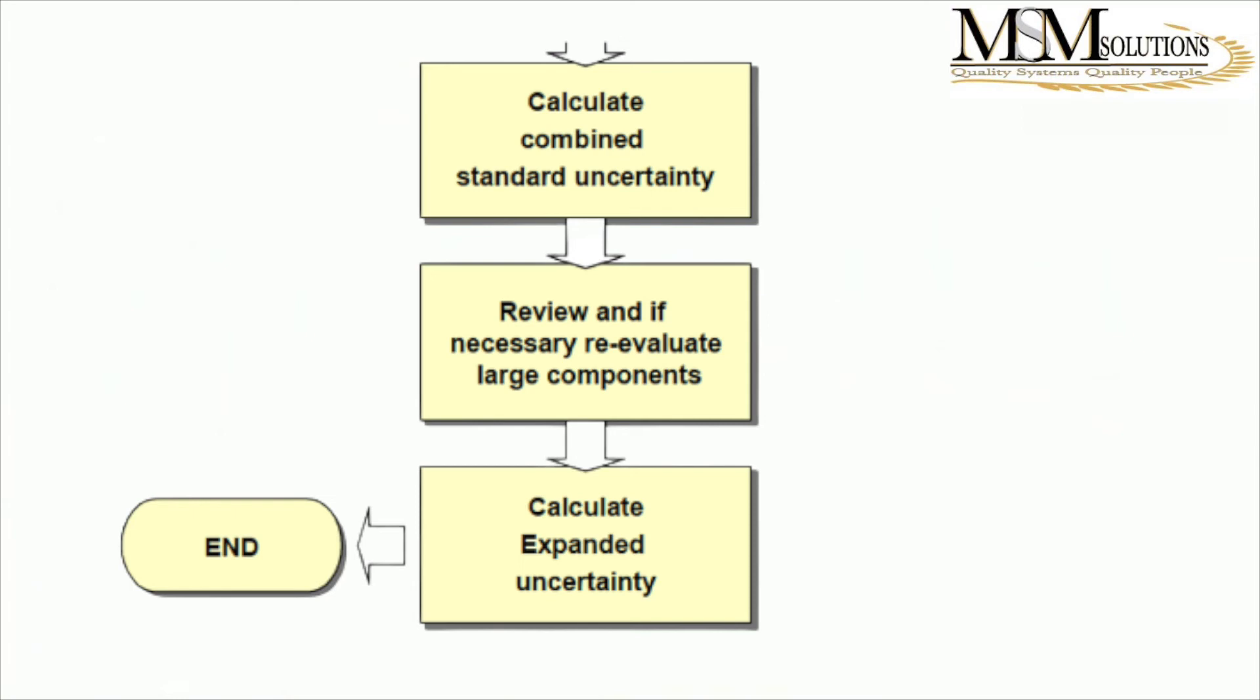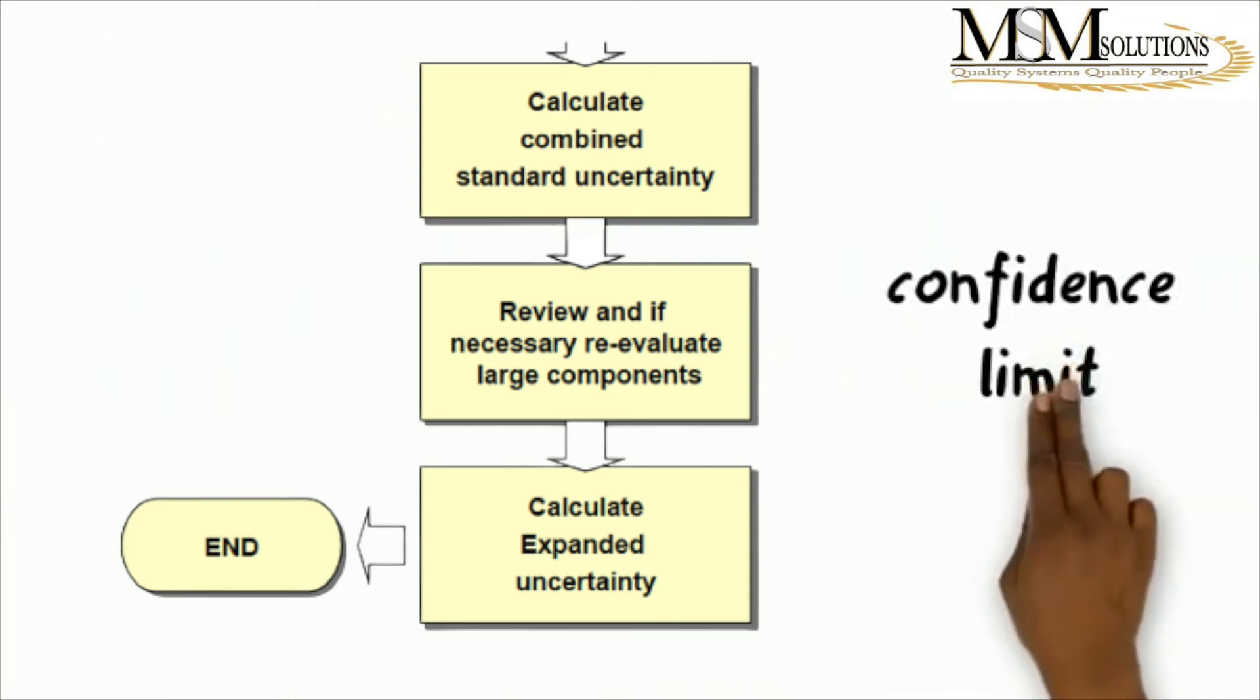So what you'll ideally do is you take, you look at the total relative to each and every one of those components. And you see which one has a higher percentage and just review how that was done or if there's anything you can do to reduce it. And after that, you then decide once you're happy with the number, you then calculate the expanded uncertainty. Essentially, what this means is you use a coverage factor. The coverage factor that you particularly use for your lab will depend on the confidence limit. There's a table that has coverage factors relative to confidence limit, and you would calculate that and have your expanded uncertainty.